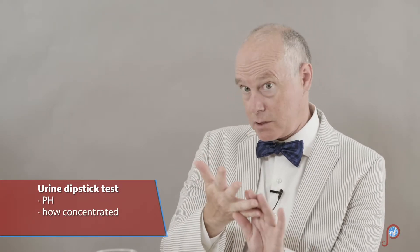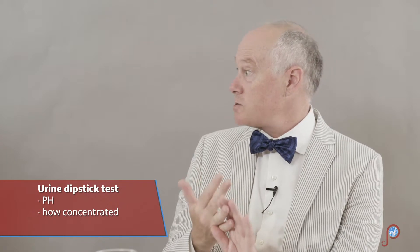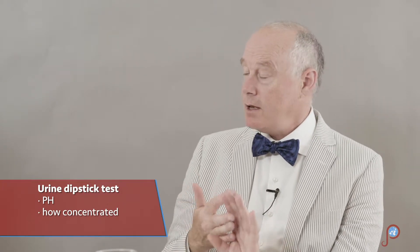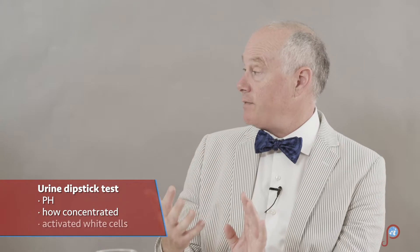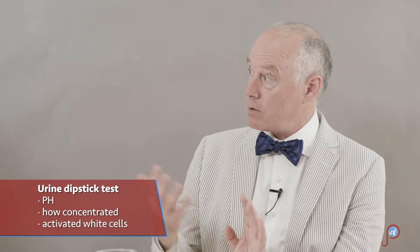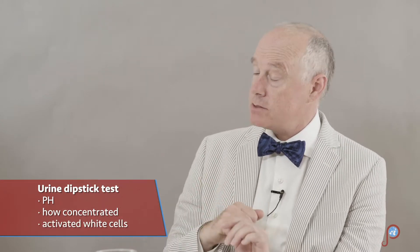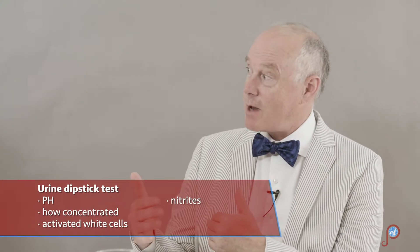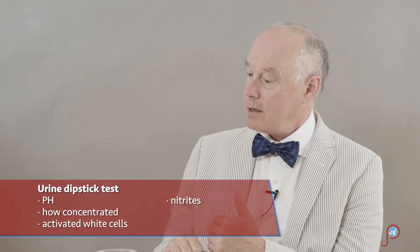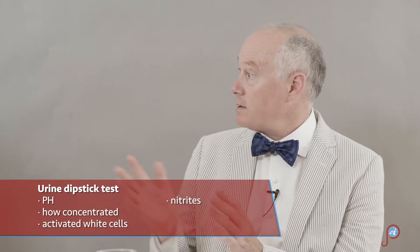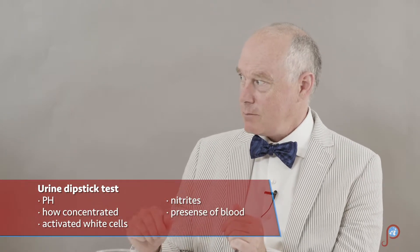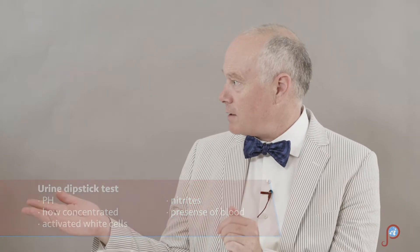The colors tell you different things. It might tell you about the pH of the urine, how concentrated the urine is — which is helpful since concentrated urine is irritating in itself. It might tell you whether there are activated white cells, something called leukocyte esterase. It might tell you about nitrites, which are produced by bacteria. It might also detect blood in the urine, which might suggest something else.